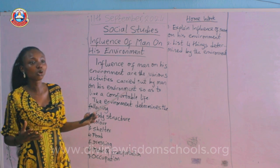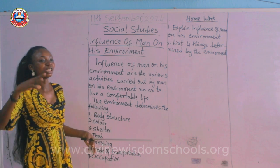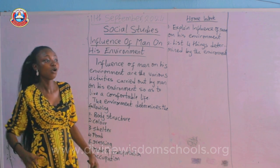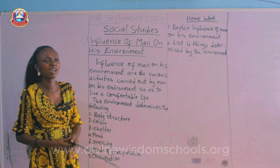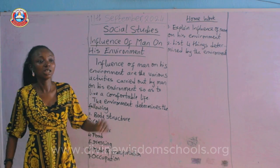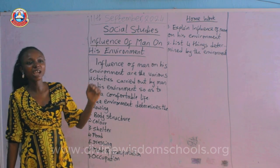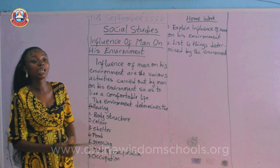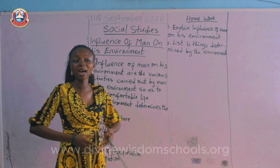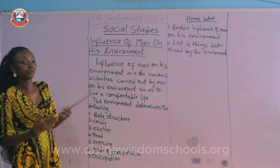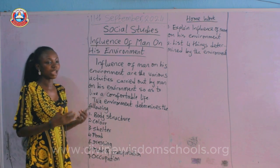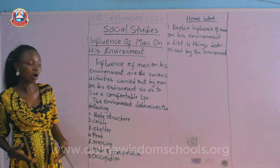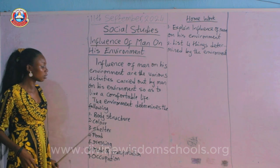The second thing is color. The environment also determines our color. People in regions with very low rainfall and high temperatures — very sunny and very hot areas — are usually dark in complexion. You hardly see fair people there, and that is because of their environment. The environment determines their color.